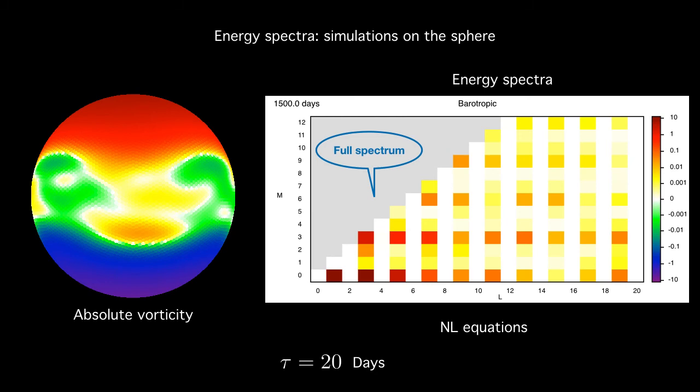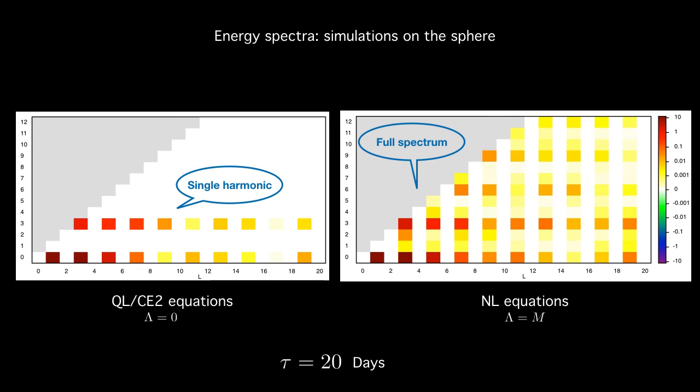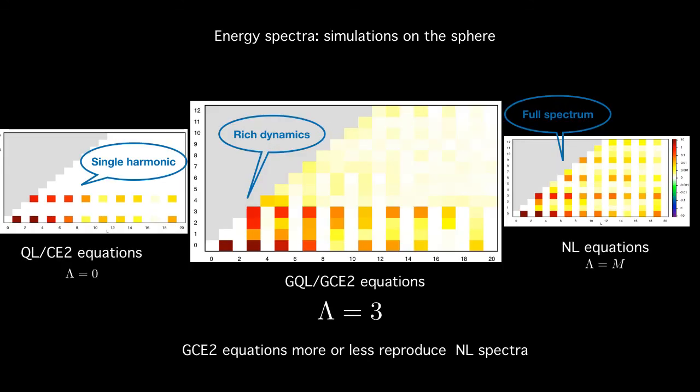So on the sphere, I show energy spectra. The vertical axis here shows the zonal wave number. And you can see, at a large relaxation time, a lot of different zonal modes are excited. QL, as expected, gets only a single harmonic write. And as noted earlier, it ends up being too simplistic. However, when we use GCE2 or GQL, at a low value of lambda, you can kind of replicate the NL spectra. So GCE2 equations more or less reproduce these spectra for a low cutoff value.